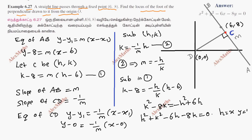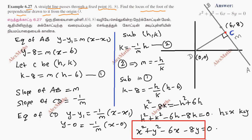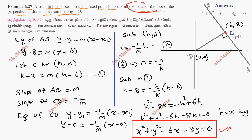Replacing H with X and K with Y, we substitute to get x squared plus y squared minus 6x minus 8y equals 0. If you trace all such points, you will get a circle. This is the general equation of a circle. The locus of the foot of the perpendicular from the origin is x² + y² - 6x - 8y = 0.